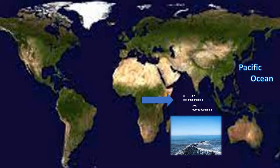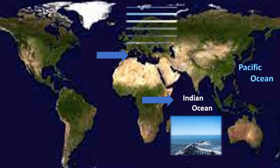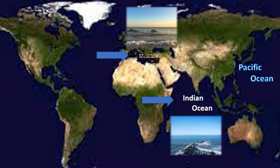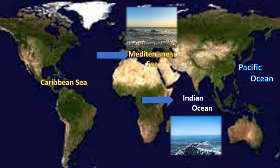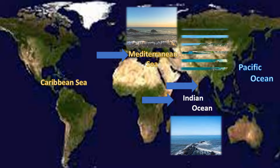For example, the Pacific Ocean or the Indian Ocean. Seas are smaller bodies of salt water that are usually surrounded by land on at least three sides, for example the Mediterranean Sea or the Caribbean Sea.